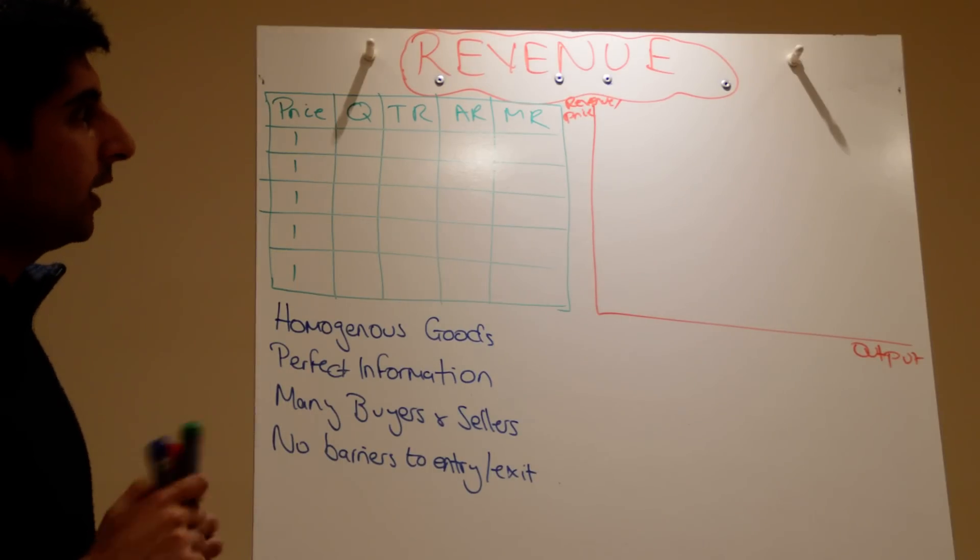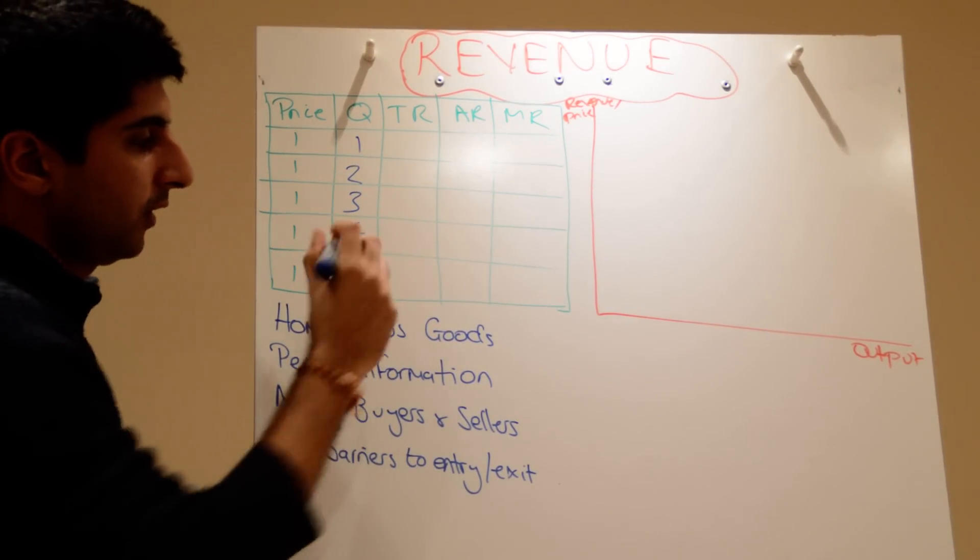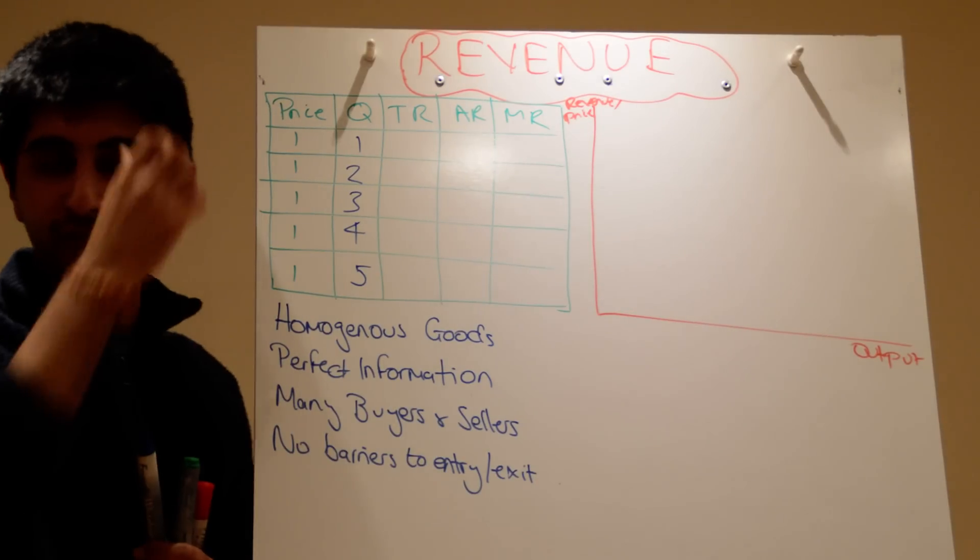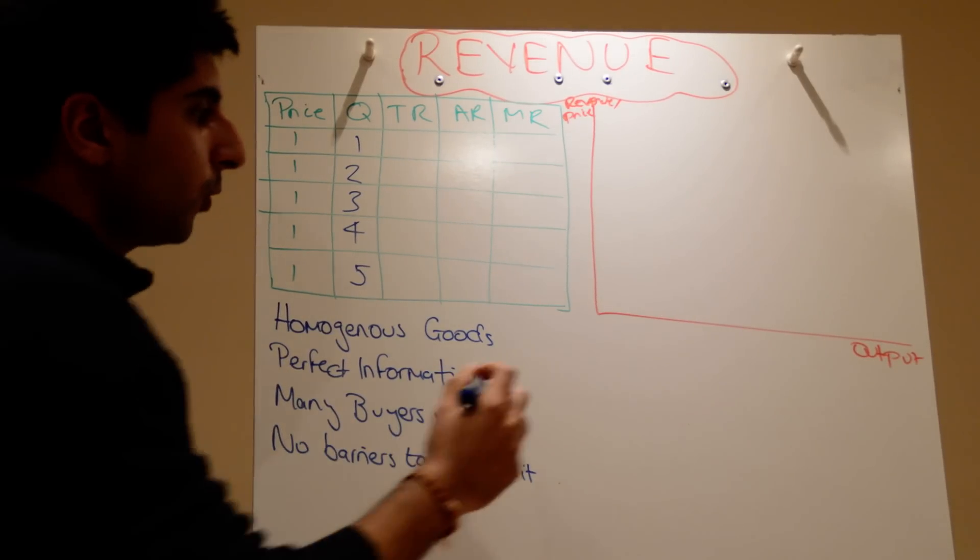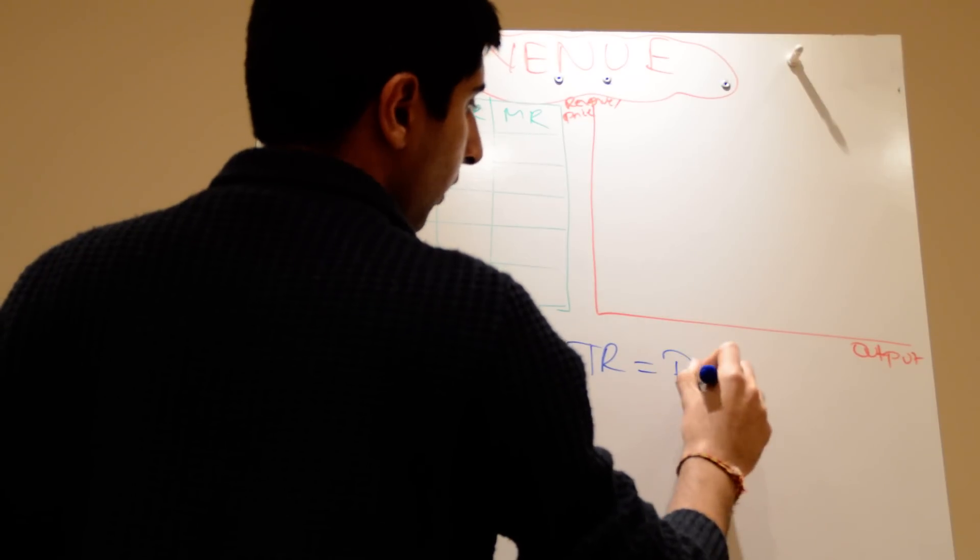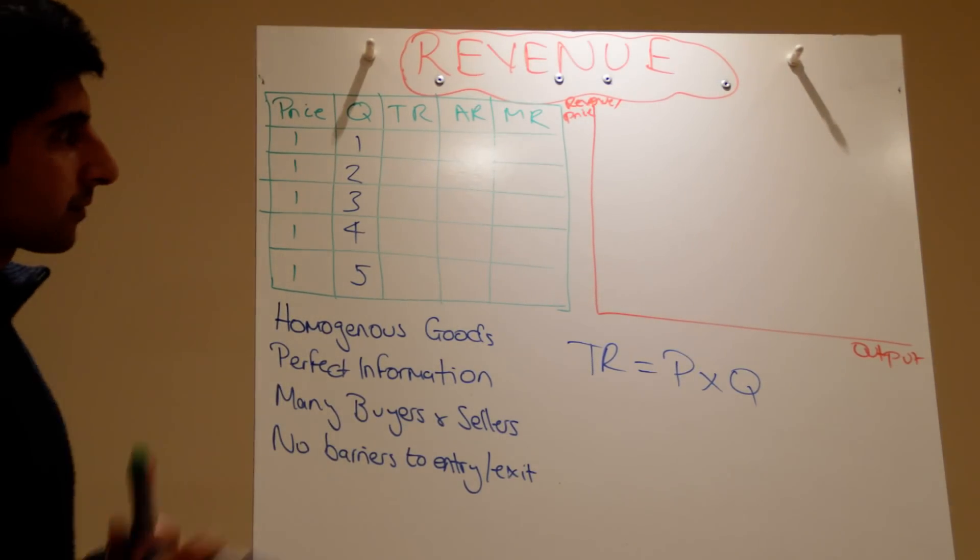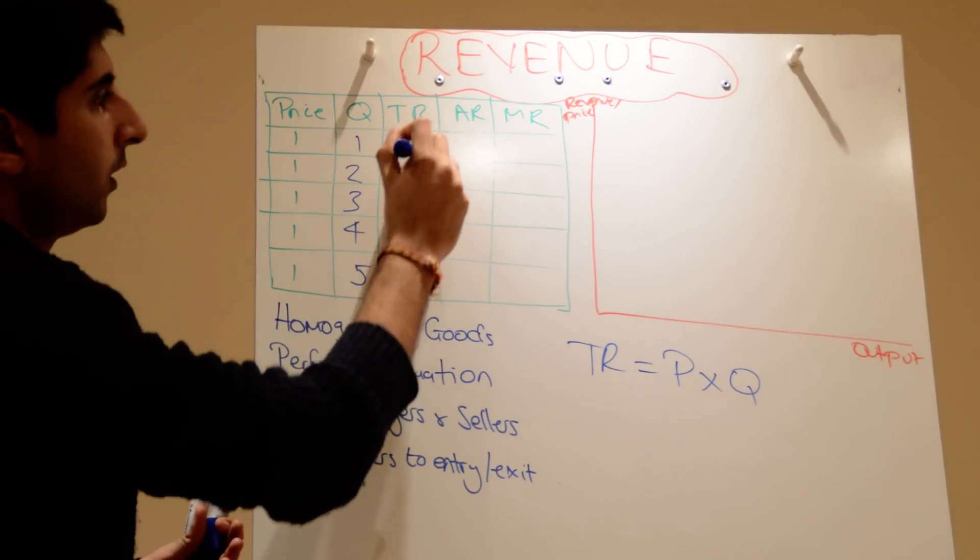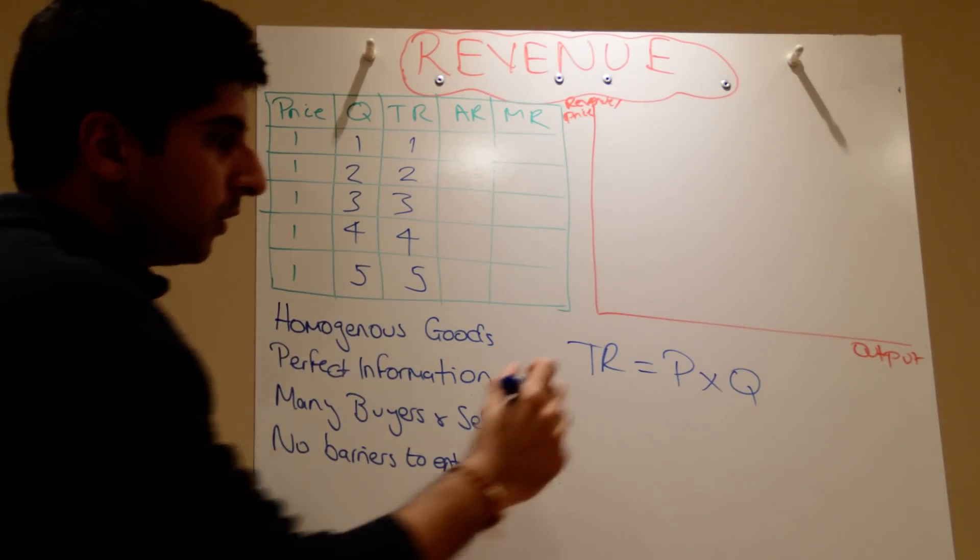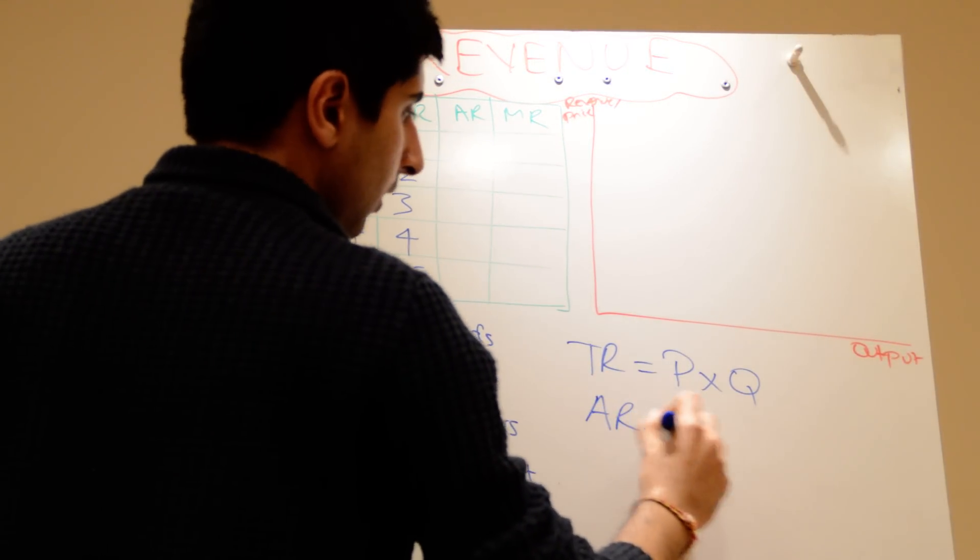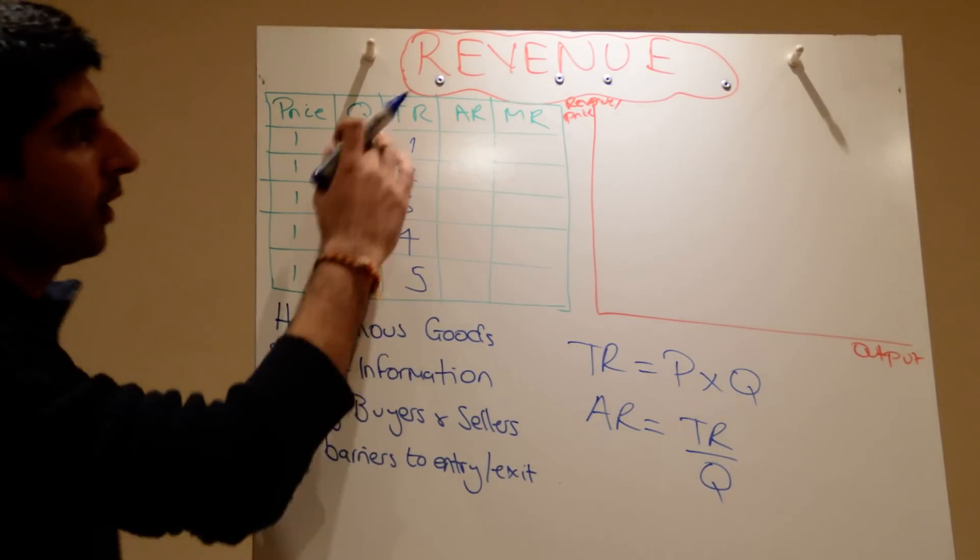Let's bring in some quantity values. So at that one price you have a range of quantity. Quantity sold. Some consumers will buy one, some will buy four, five etc. at that one price. So now total revenue. How do we work out total revenue? Total revenue is just the price of a good times the number of those goods you sell. So P times Q is just going to be one, two, three, four and five.